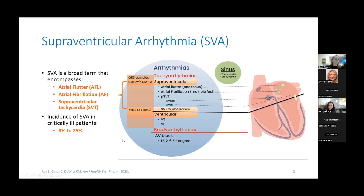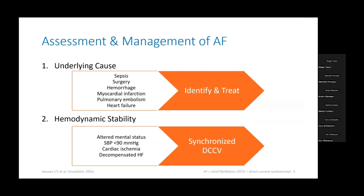The incidence of these supraventricular arrhythmias occurs at anywhere between 8% to 25% of patients, depending on the studies reported. When we get a patient with new-onset AFib — specifically those with secondary AFib caused by a precipitating factor — the first thing we want to assess is that underlying cause. These factors could include sepsis, surgery, hemorrhage, MIs, pulmonary embolism, or heart failure with pulmonary edema.